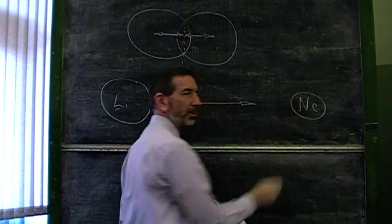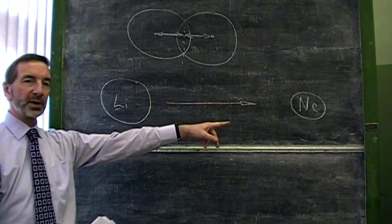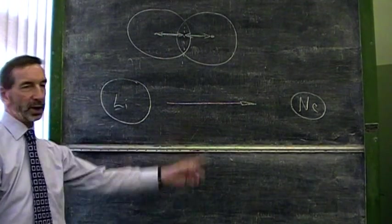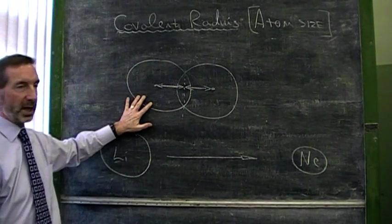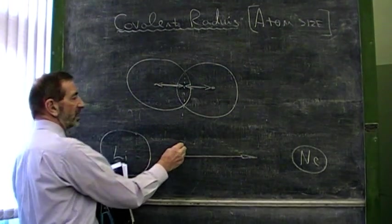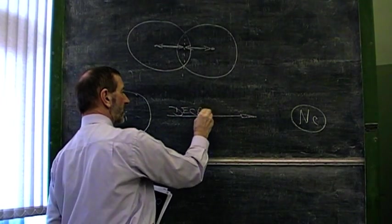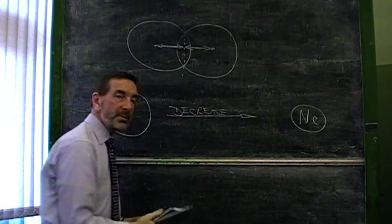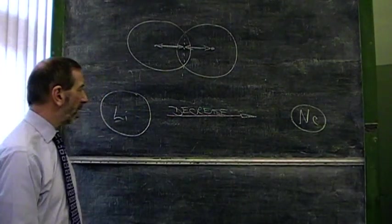It's contrary to what most people think. However, you will not find a value for neon in the data book, or any noble gas, because the noble gases don't form bonds like this, and therefore no values are available. Having said that, the trend, nevertheless, is for there to be a decrease in atom size. And this begs the question, why? Why do atoms become correspondingly smaller across the table?